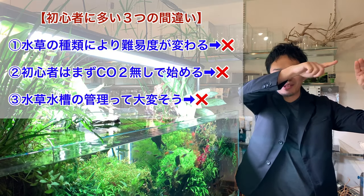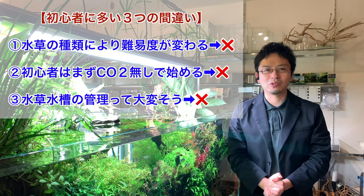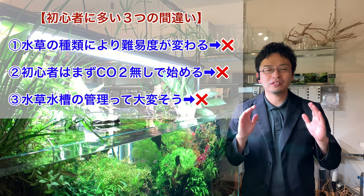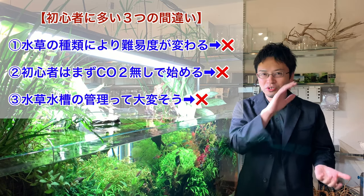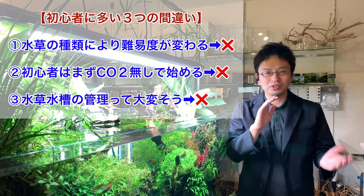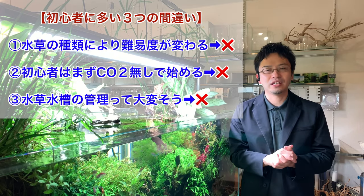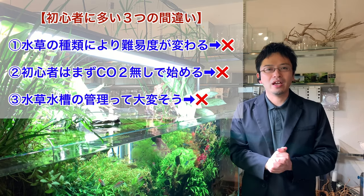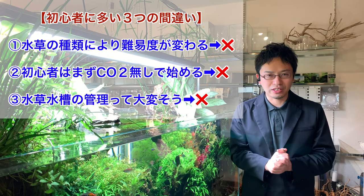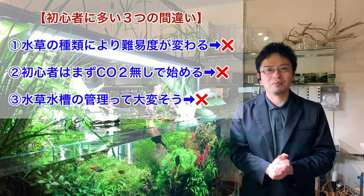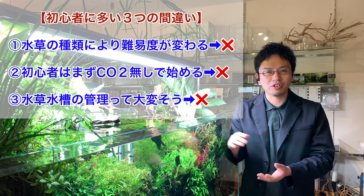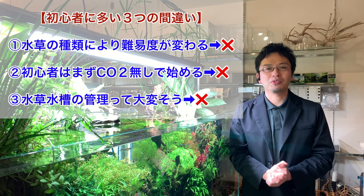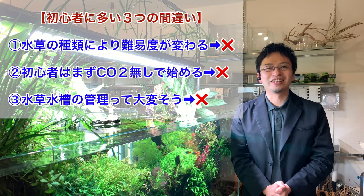Planted aquariums are things that will start to stabilize. At first it is unstable, but as time passes, the water quality will stabilize and it will get easier and easier. The plants' thickness will get better and the plants will get rid of the dirt, therefore algae will be less likely to grow and the growth speed of plants will slow down, making the trimming frequency slow down as well. It will definitely get easier.